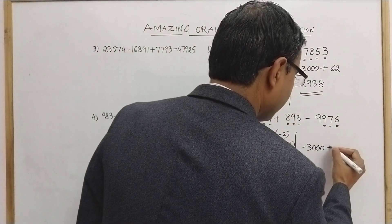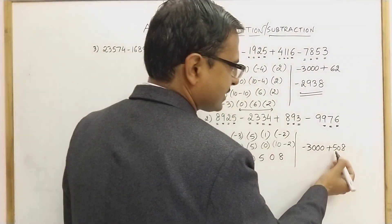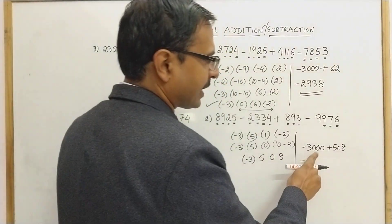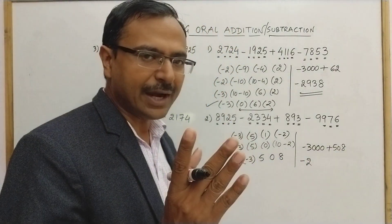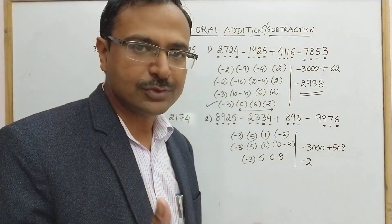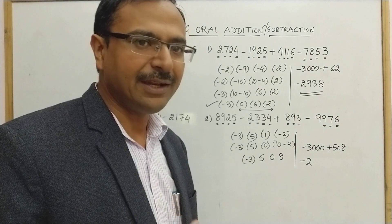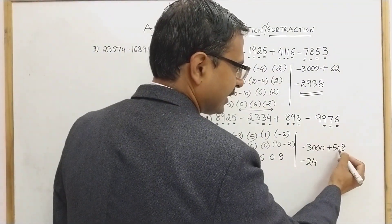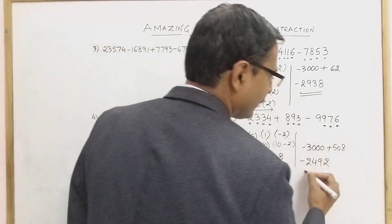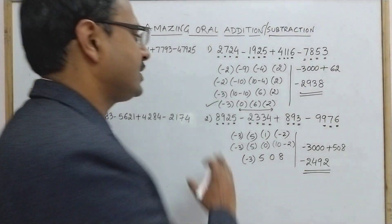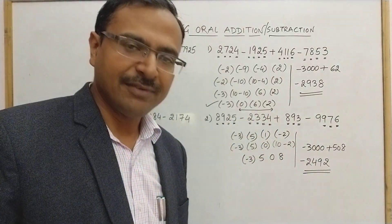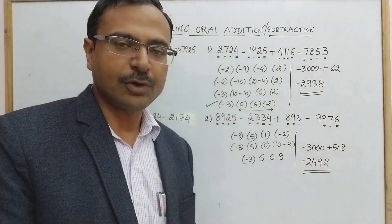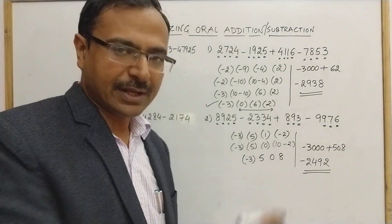Minus 3 followed by three zeros gives minus 3000, then add 508. Since 508 is less than 1000, the answer will be minus 2000 something. I need to subtract 1000 minus 508. Using the Vedic rule — all from nine, last from ten: 9 minus 5 is 4, 9 minus 0 is 9, 10 minus 8 is 2. So the answer is minus 2492.